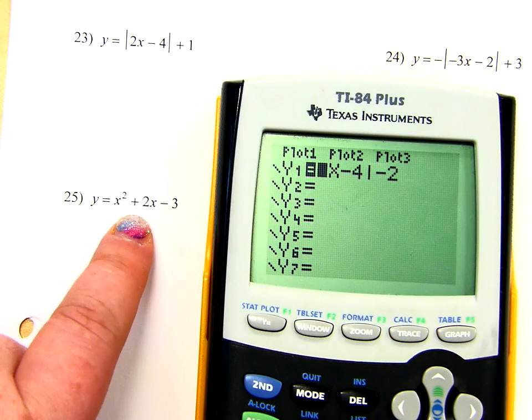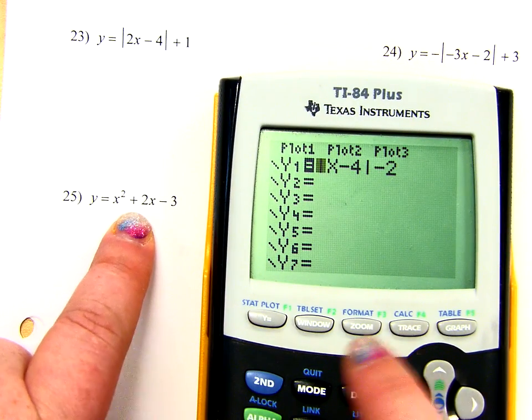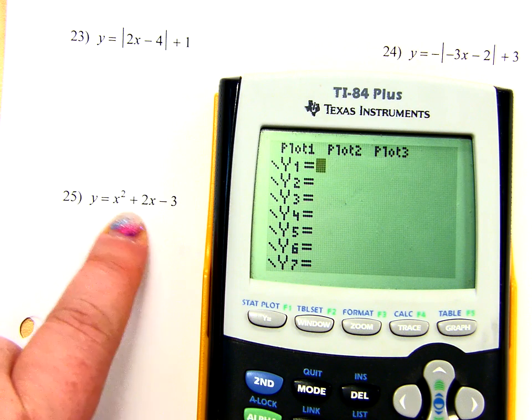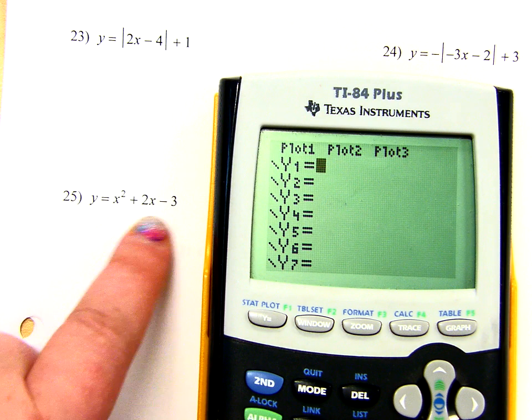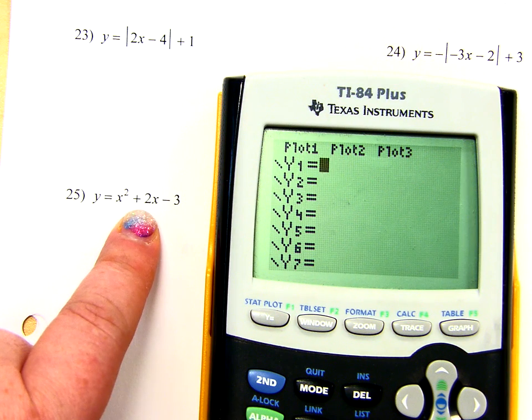If we're going to graph number 25, that's going to be a parabola. So let's go to y equals, clear out the old stuff. All I have to do is type in this equation, and then if I find that vertex point, I hit all the same buttons I was just hitting for the absolute value ones.